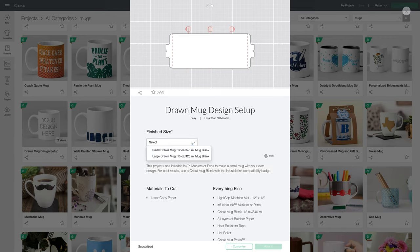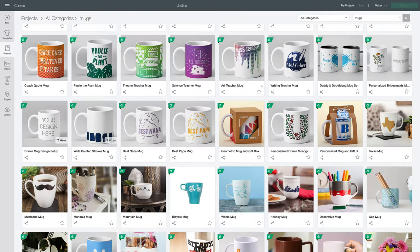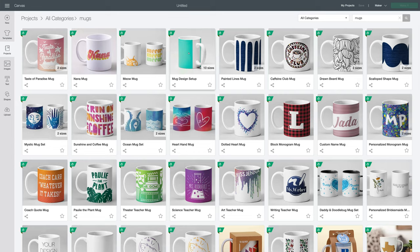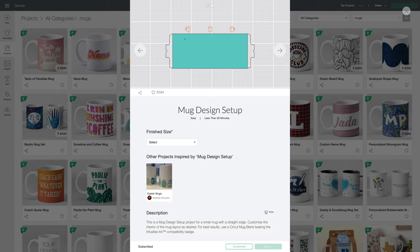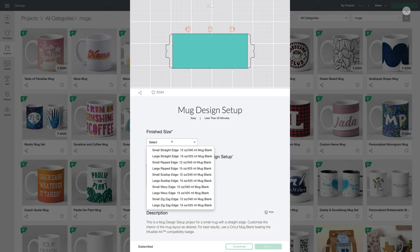You still want to choose the correct mug size. This template is actually designed for infusible ink markers and pens, so it will need to be resized to use it for print and cut sublimation. In this video I want to show you how to use this template. The teal area is a perfect size to use for print and cut sublimation, so you won't have any resizing to do. You will need to select the size of mug you're using, either small or large.